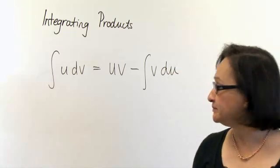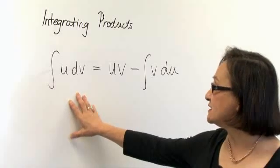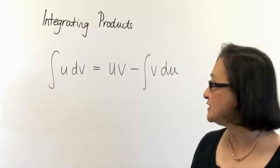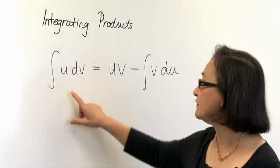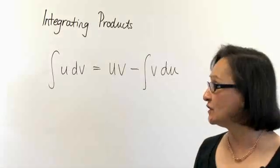One of the ways to solve an integral of a product is to use integration by parts. The formula for integration by parts is the integral of u dv equals uv minus the integral of v du.